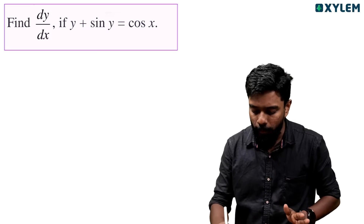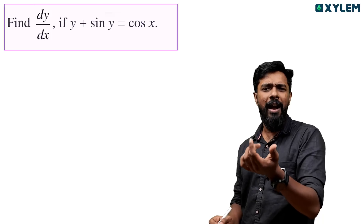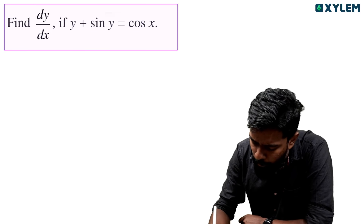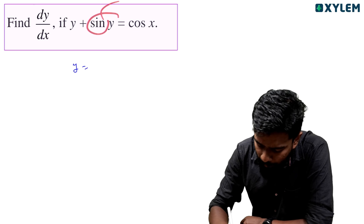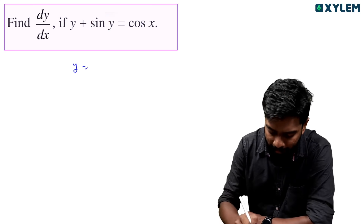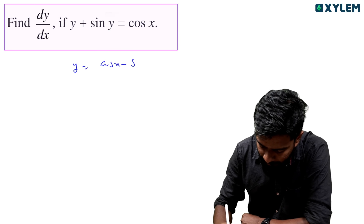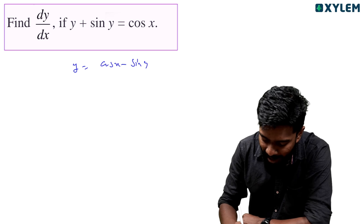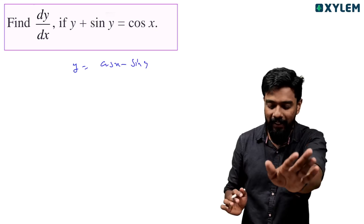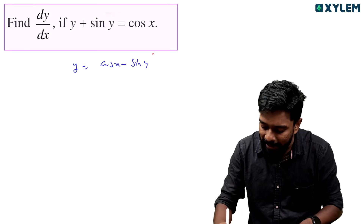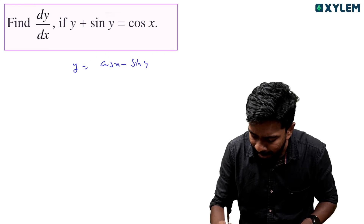y is expressed as a function of x. For example, y equal to sin x, or y equal to cos x, or y equal to some expression where y is expressed in terms of x. That is an explicit function.